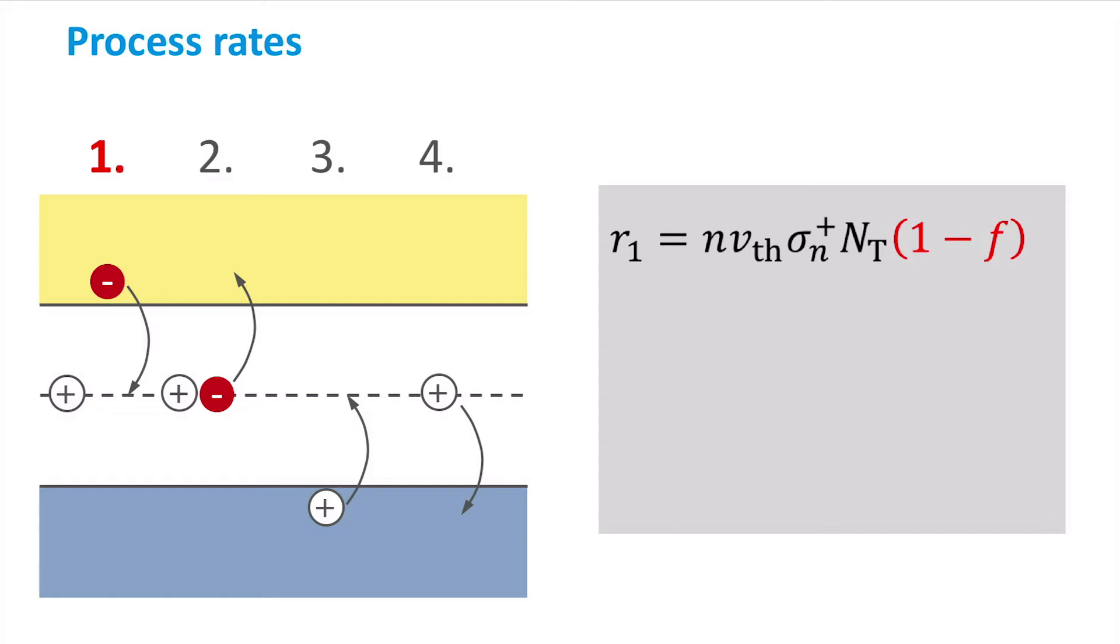VTH and sigma N are the thermal velocity and capture cross-section respectively, which we will discuss in a moment. Please note that the charge state of the trap is incorporated in the capture cross-section. Since this is a donor-like trap, the charge state is positive if the trap is unoccupied.